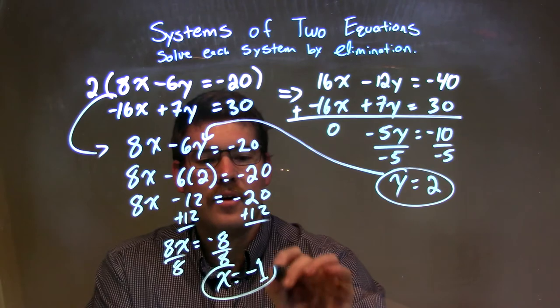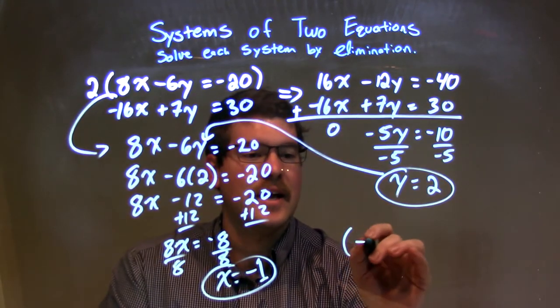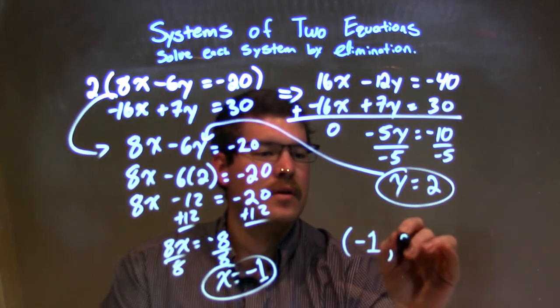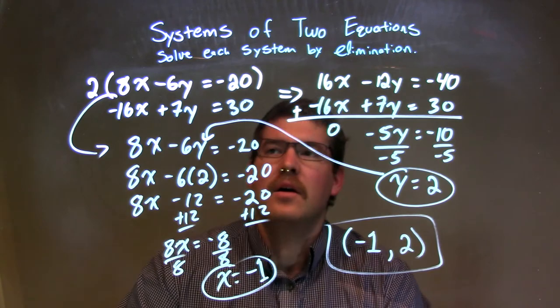So, we have our x and y value. We can combine them together to be a coordinate point, which is negative 1 comma 2. And there we have it. So, let's recap.